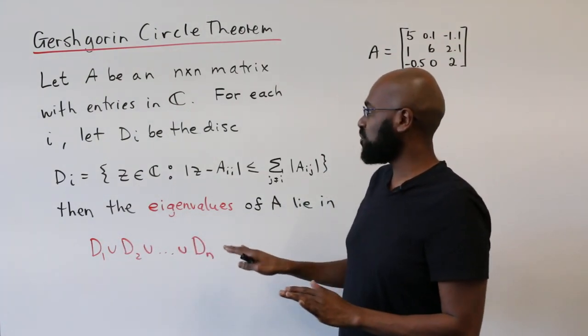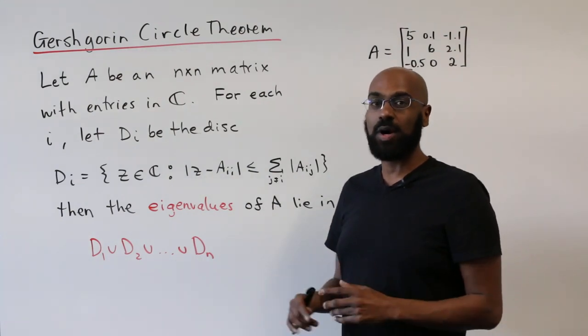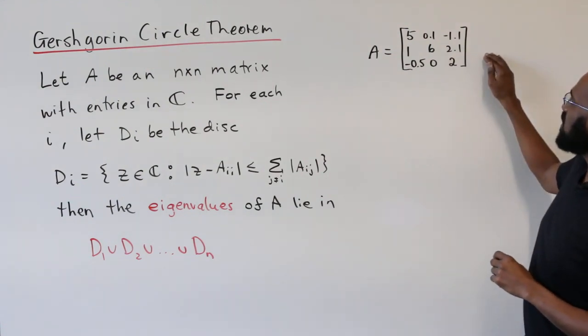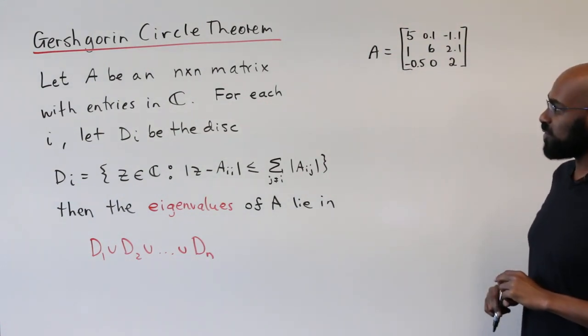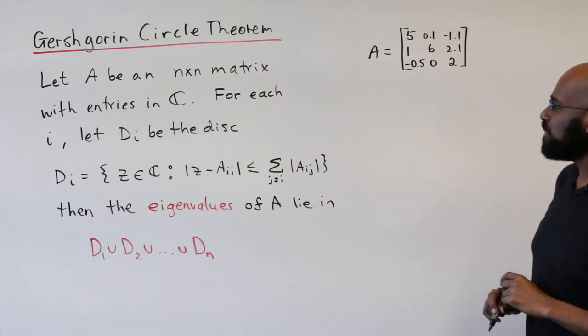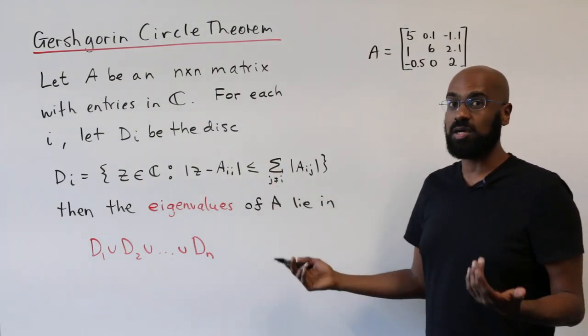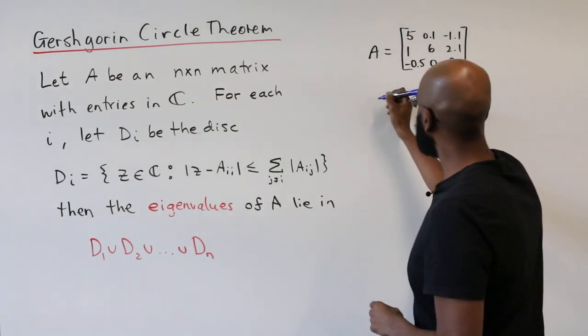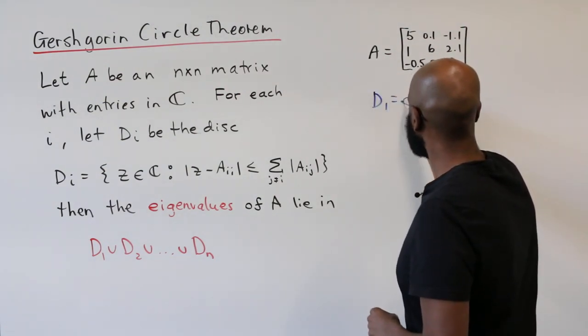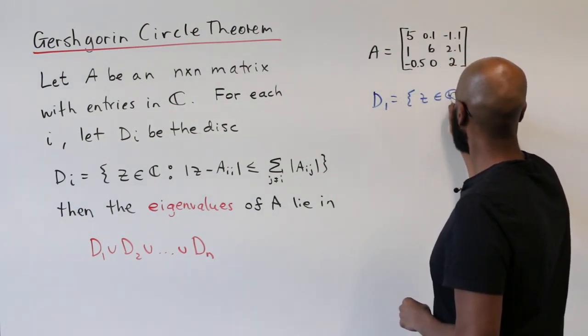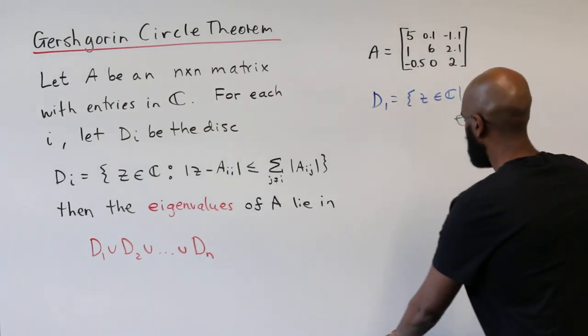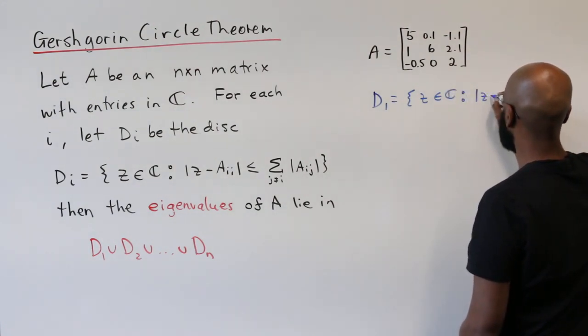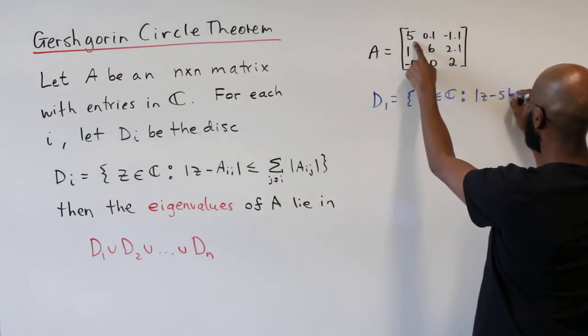So before getting into the proof of this, which actually has a surprisingly quite short proof, I want to give an example so you get a sense of what this is like. So here is a matrix A with entries in the complex numbers, they happen to be real. Let's write down what these disks are, and then look at the region in which the eigenvalues must lie. So first of all, D1 is the set of points in the complex plane, such that the absolute value, or the magnitude of Z minus this number here, which is 5,